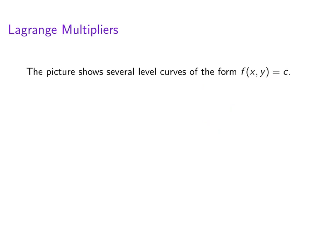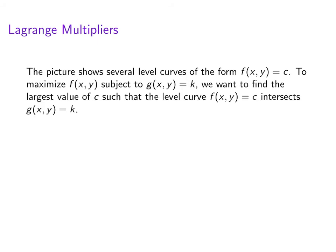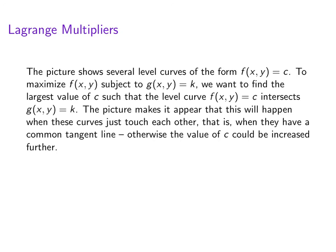So this picture is showing us some level curves of f. If we want to maximize f(x,y) subject to some constraint, we want to find the largest value of c such that the level curve f(x,y) = c intersects g(x,y) = k. So the picture makes it look like this happens when they have a common tangent line. Because if they don't have a common tangent line, then the value of c for that level curve could be increased even more.